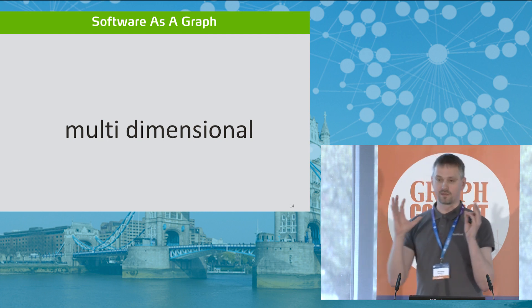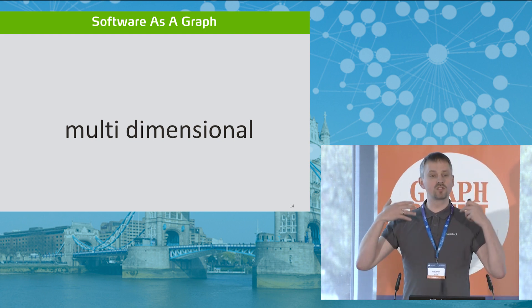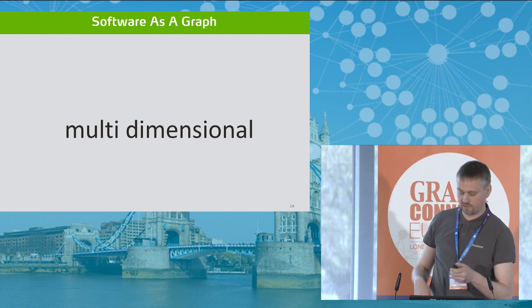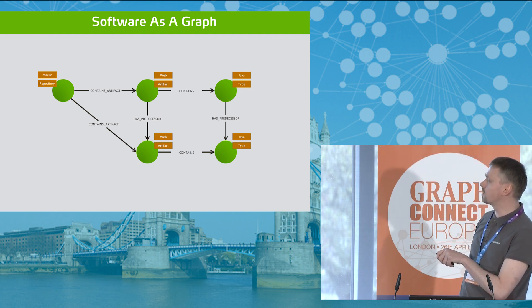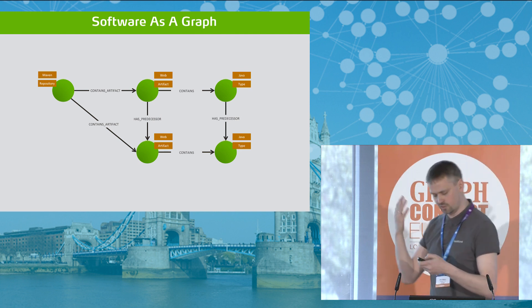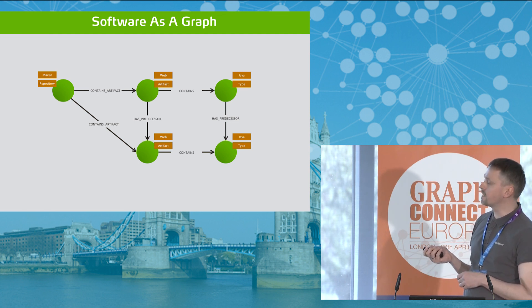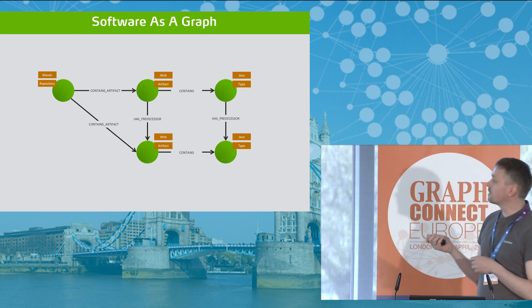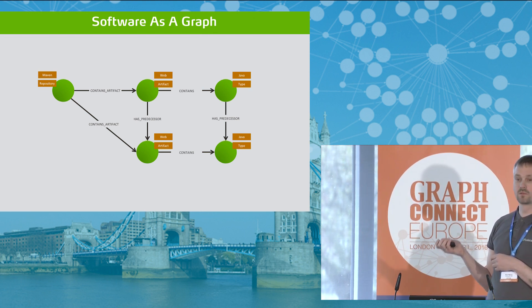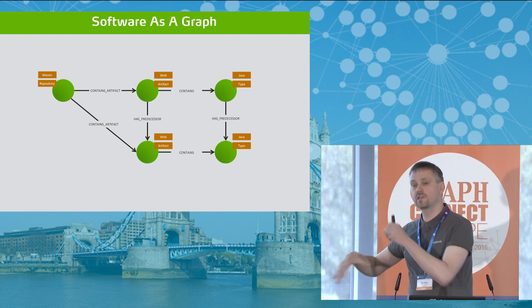A second aspect is that the graph is by nature multidimensional. We can also scan whole software repositories and artifacts which have been deployed there. For instance, that web artifact we had could also exist in a repository in an older version with an older version of a class. If we have some idea of how these relate to each other, we can add relations like 'predecessor' on both levels and find differences — for instance, whether there have been any interface changes for certain Java types. We can do analysis in multiple dimensions, still containing the level of detail from the static view.